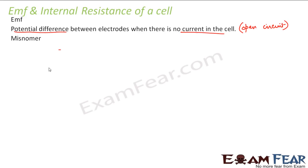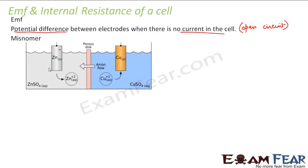EMF is a misnomer because many people think that since it is called electromotive force, it must be some force, but it is basically the potential difference. It is named electromotive force because it acts as an initiating force for the current to flow in a circuit. The EMF of the cell initiates current flow in the circuit, and since it acts as the initiating force, it is known as electromotive force — however, physically it is the potential difference.